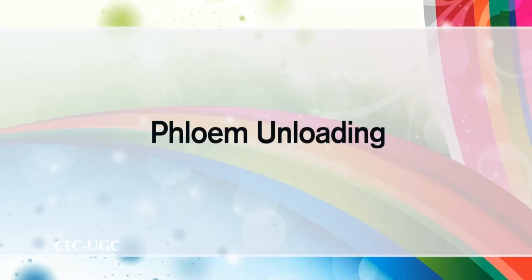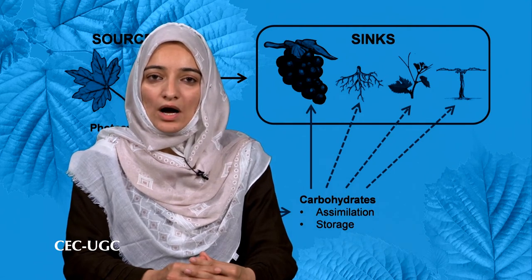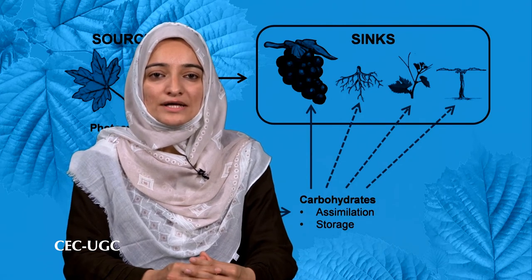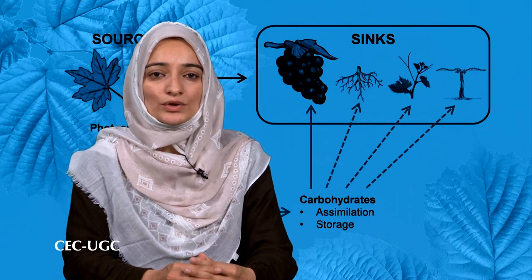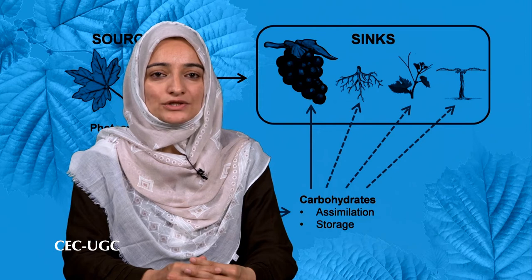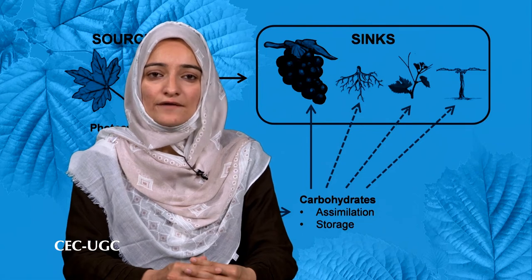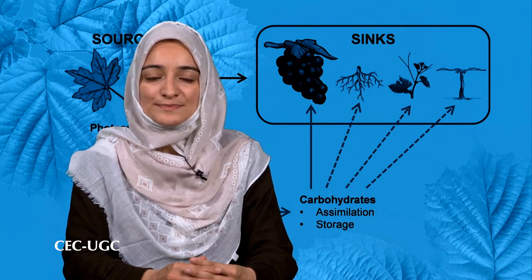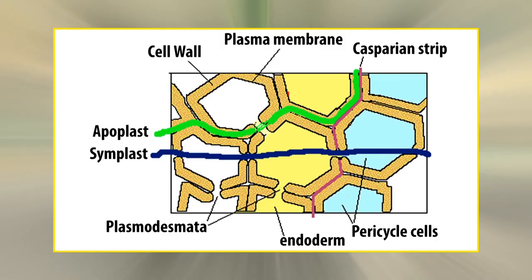Now coming to phloem unloading. Once sucrose along with water reach the sink tissues, they move out from the phloem to adjacent cells, where sucrose is consumed by the cells. Phloem unloading can occur via symplastic or apoplastic pathways. The main unloading route from phloem to heterotrophic sink tissues is the symplastic pathway via plasmodesmatal connections. Even though symplastic unloading is prevalent, the apoplastic route is unavoidably necessary in certain cases — for instance, in developing seeds having no symplastic connections with maternal tissues for unloading to the filial tissue.